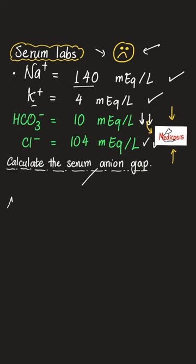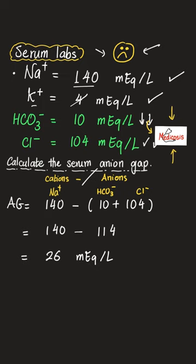We would like to get the serum anion gap. It equals the positives minus the negatives. What's the main positive? Sodium. You can ignore potassium because 4 is not a big deal. Cations, sodium, minus anions, chloride and bicarbonate. Do the math. Anion gap is 26.